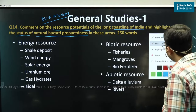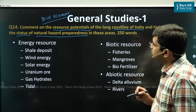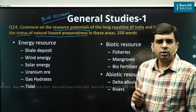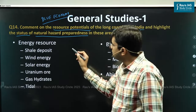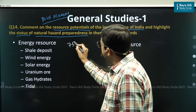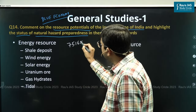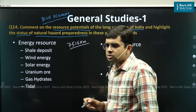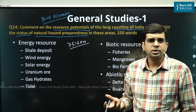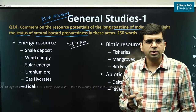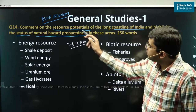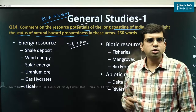To handle this question, we first need to identify the introduction. In the introduction, we can clearly mention that India has a very long coastline of 7,516 km and various physical features are present along it. After a short introduction, we can directly start addressing the first demand — the resource potential.